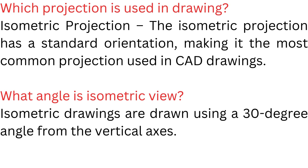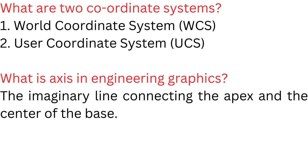What is the angle in isometric view? Isometric drawings are drawn using 30 degree angles from the vertical axis. What are the two coordinate systems? World Coordinate System (WCS) and User Coordinate System (UCS).